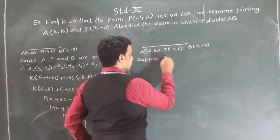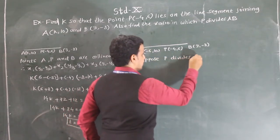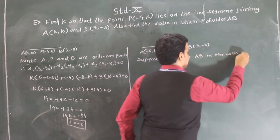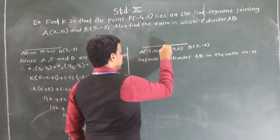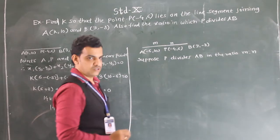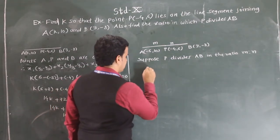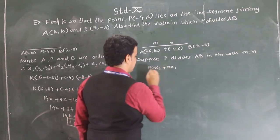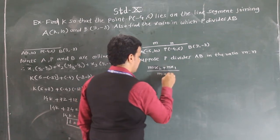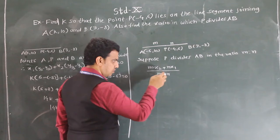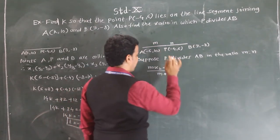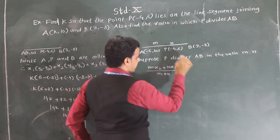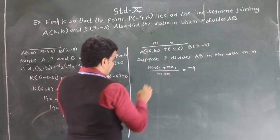Suppose P divides AB in the ratio M to N. By using the section formula, the x-coordinate of P is (M·x2 + N·x1) / (M + N). This equals the x-coordinate of point P, which is -4.